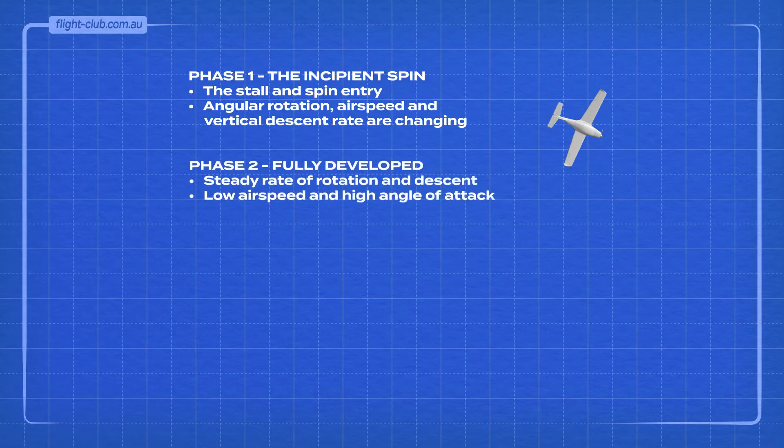Phase 2, fully developed. If uncorrected, an incipient spin degrades into a fully developed spin. In a fully developed spin, the aeroplane settles into a steady rate of rotation, with a steady rate of descent at a low airspeed and a high angle of attack.